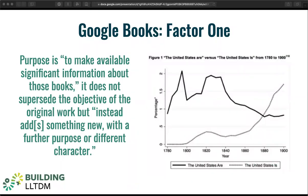The court said that the purpose of Google Books is to make available significant information about those books, and held that this purpose is exactly the type of transformative purpose that fair use should enable. For example, Google Books allows users to track the frequency of references to the United States as either a single entity — 'the United States is' — or in the plural — 'the United States are' — and to see how those uses changed over time. In this way, text and data mining does not merely supersede the original purposes of the work, but instead adds something new with a further purpose or different character.